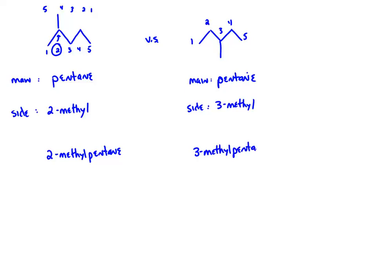There are some exceptions: if the location is obvious and there's no doubt — for instance, a molecule like methylpropane where there's only one spot the methyl group can be — sometimes they leave the number off. You'll find sometimes they put 2-methylpropane and sometimes just methylpropane because there's only one spot that methyl group can be. I try to usually put it on, but I am pretty flexible.